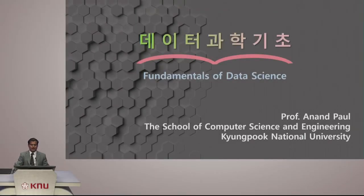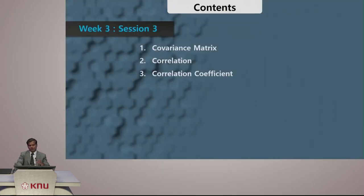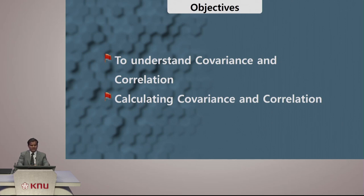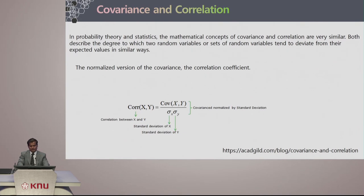Hello and welcome back to this course on fundamentals of data science. Today we are going to discuss more about covariance, covariance matrix, correlation, and correlation coefficient. The main objective of today's lecture is to understand covariance and correlation, know how to calculate them, and see a couple of examples on how to calculate these measures.